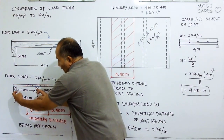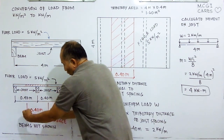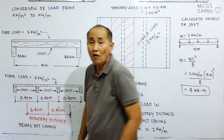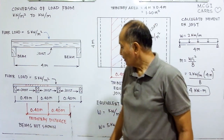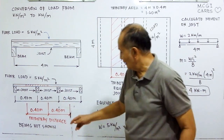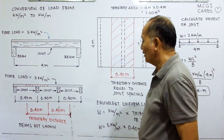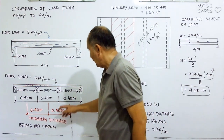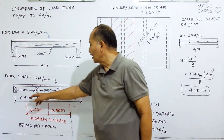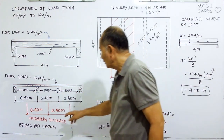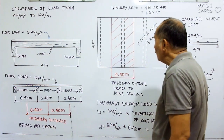That joist spacing can be converted into a tributary distance. One half of this spacing plus one half of the adjacent spacing gives a tributary distance of 0.4 meter. So the tributary distance equals the joist spacing, which is 0.4 meter.